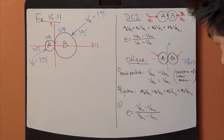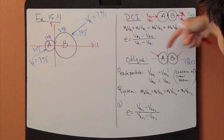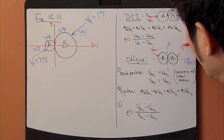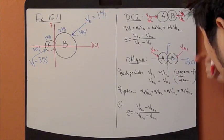Now for oblique impact, it might look something like this. So VA1, VB1, right before impact.